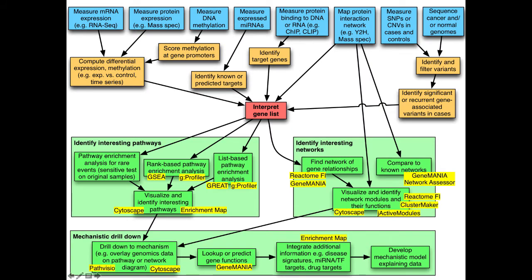The more detailed version of the workflow includes blue boxes showing different types of genomics and omics data you can produce, and orange steps required to get to your gene list. Some methods like protein interaction screening generate the gene list right away, while other methods require multiple levels of scoring and differential expression analysis first. Once you have your gene list, you can look for known pathways or for interesting networks which might not be known. Pathway enrichment analysis is what we'll talk about today — again, the most popular one.